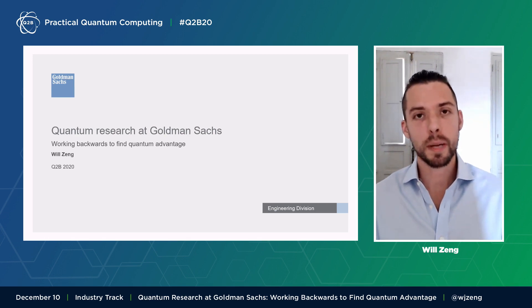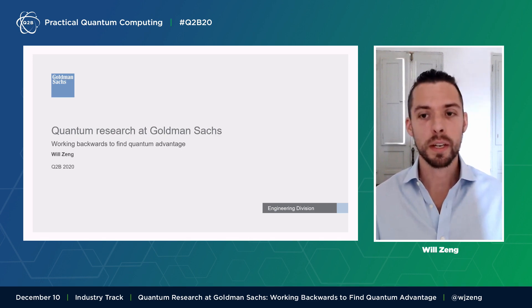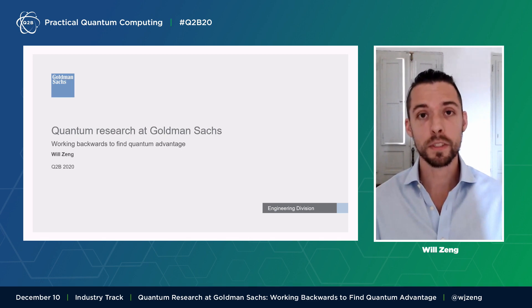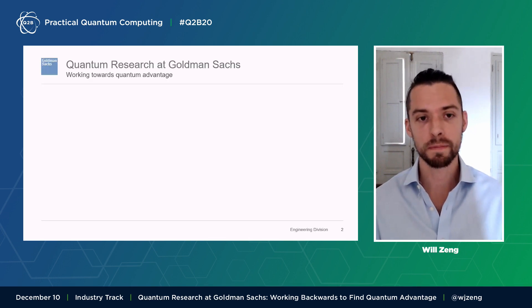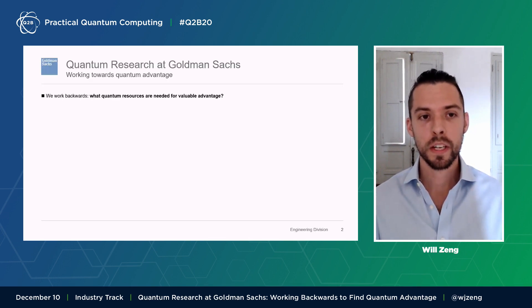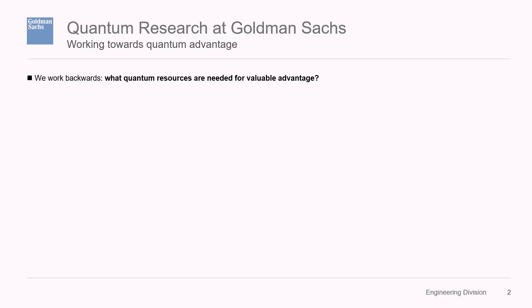We do this in collaboration with the broader ecosystem of startups, academics, and folks in industry. Today, I'm going to speak about our approach, which is to work backwards to find quantum advantage, and preview some of our results so far. We work backwards from problems that we can concretely define mathematically in the financial sector and ask the question: what quantum resources are needed in order to find valuable advantage?